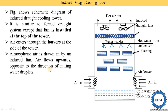Air flows upward, opposite to the direction of falling water droplets. You can see the air enters from the bottom and moves in the upward direction. Hot water from the condenser is supplied at the top of the tower through water nozzles, and the hot water is sprayed. The direction of the water is top to bottom, and the direction of the air is bottom to top — they are opposite to each other.